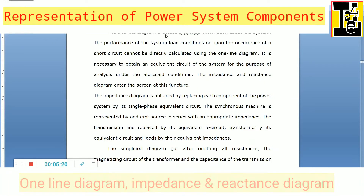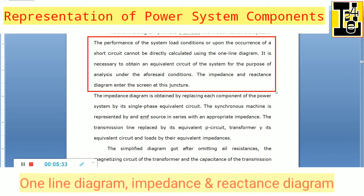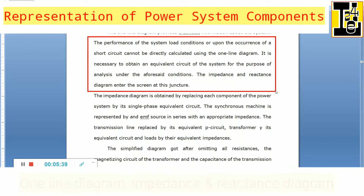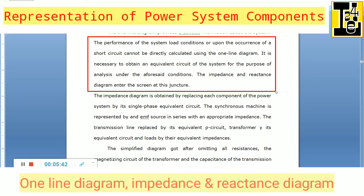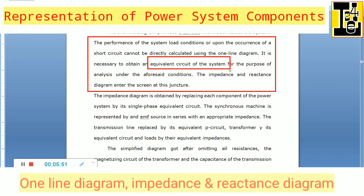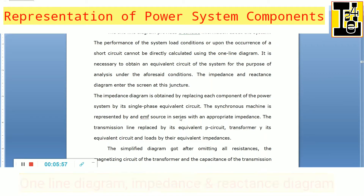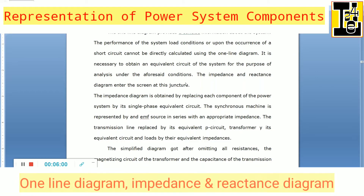The one line diagram provides concise information about the system, but performance under load conditions or upon the occurrence of a short circuit cannot be directly calculated using it. It is therefore necessary to obtain an equivalent circuit of the system for analysis under fault conditions, short circuits, or open circuits. This is where the impedance and reactance diagrams come into the picture.